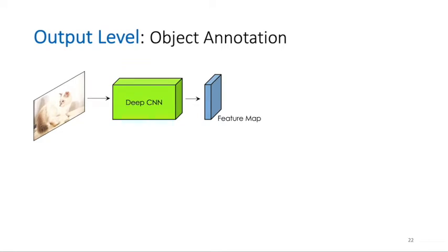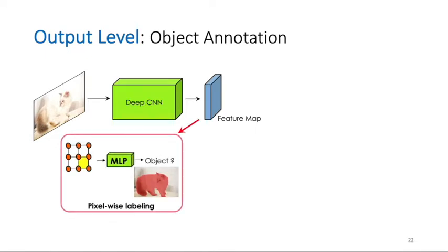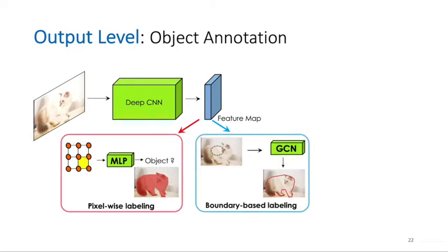We can also apply our deformable grid at the output level for object annotation to raise the image boundaries with either pixel-wise labeling or boundary-based methods. For pixel-wise labeling, instead of predicting pixel-wise labels, we predict the label for every grid cell.